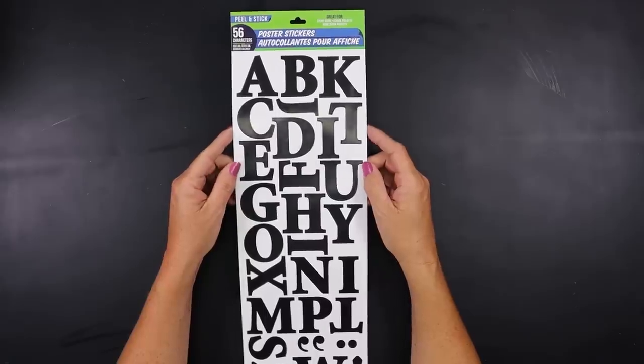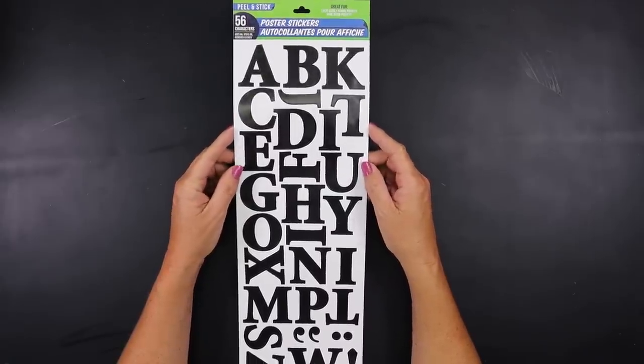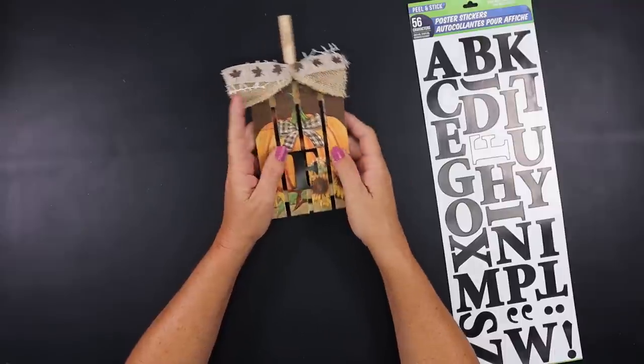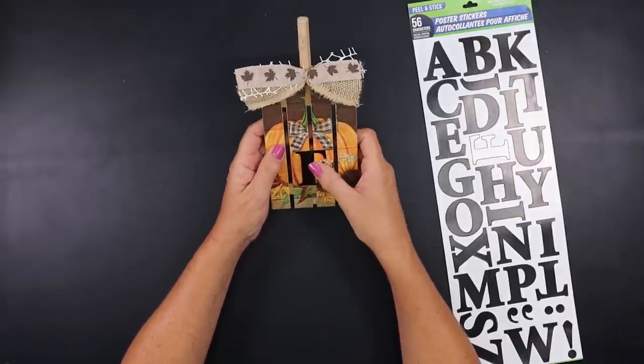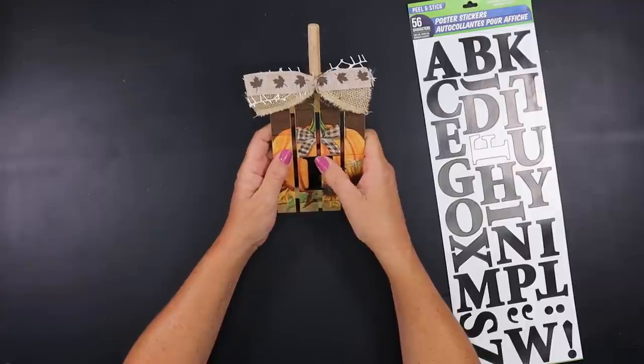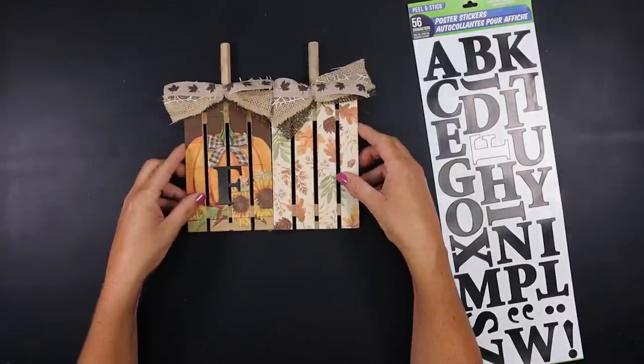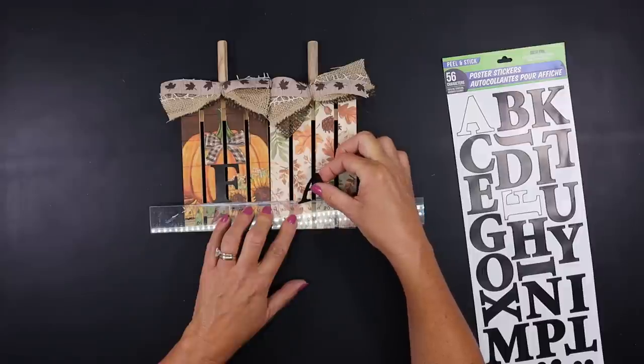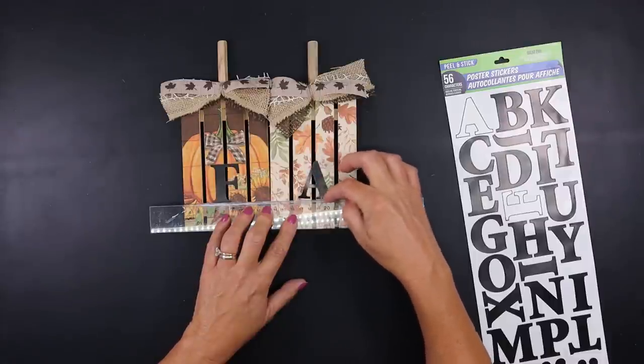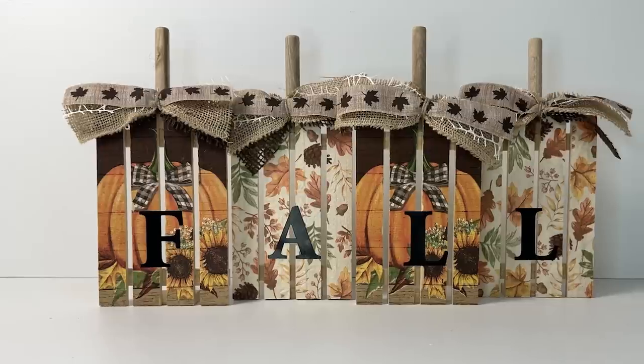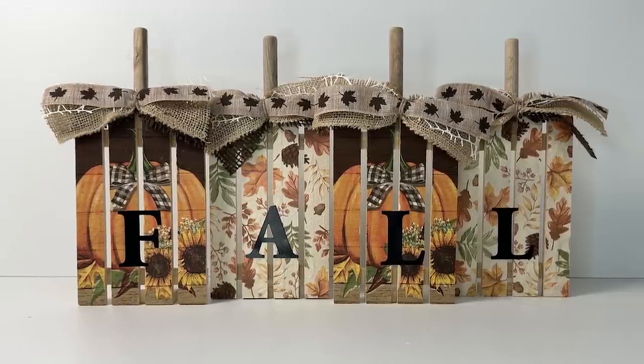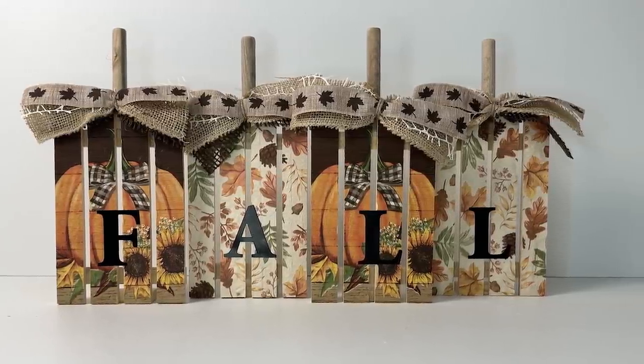Using some Dollar Tree poster stickers I'm going to spell out the word fall and attach each one of these stickers to an individual palette. You could add some Mod Podge. Mine adhered very well so I didn't need to do that. To line the lettering up I'm going to line each palette side by side and then use a ruler to start off with the first letter so I can make sure everything lines up. And this project turned out absolutely gorgeous but I would love to know what you guys think.